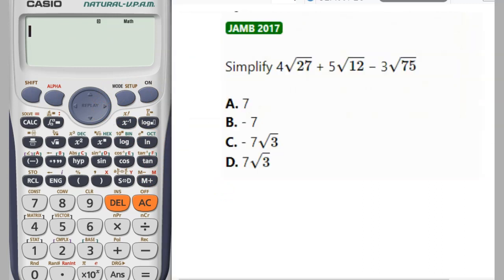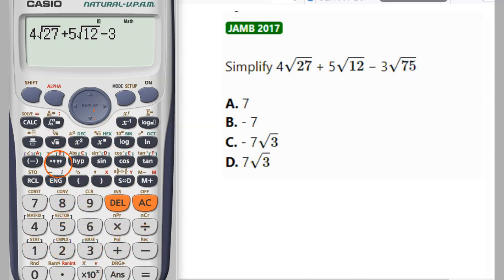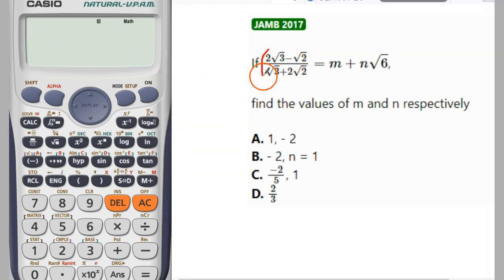In case you're also taking JAMB — the Nigerian exam — you can use a calculator to do it. So we are supposed to simplify this JAMB 2017 question. We type 4 root 27, space, plus 5 root 12, space, minus 3 root 75, equals. That gives you the simplified form as 11 root 3. Another JAMB question also appears — you can use the calculator for that one too.